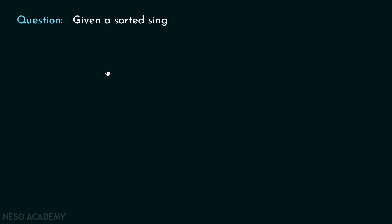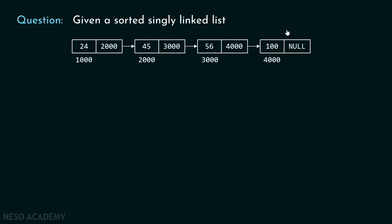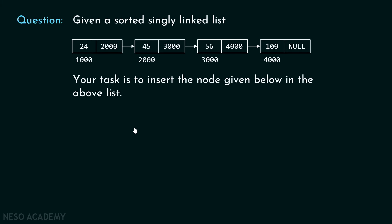Now let's consider the question. Given a sorted singly linked list — you can see the elements are arranged in ascending order — your task is to insert the node given below into this list. Whenever we try to insert a new node in a sorted singly linked list, we must place that element in such a way that it will not affect the order of the elements.